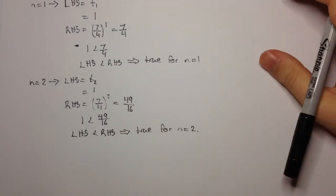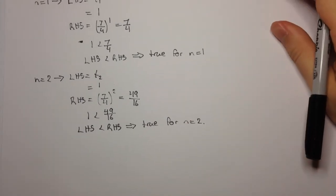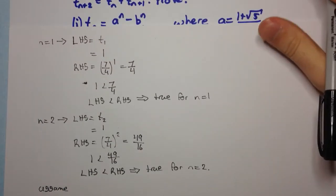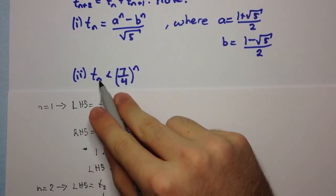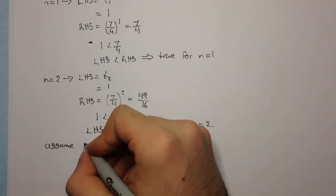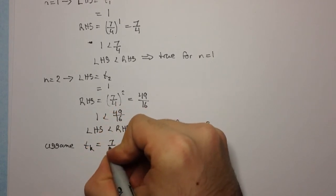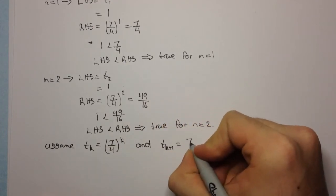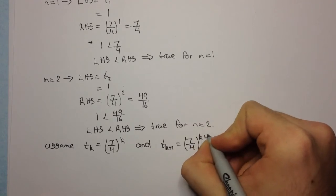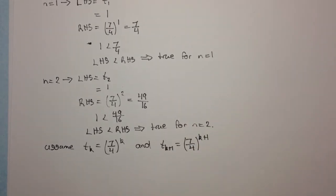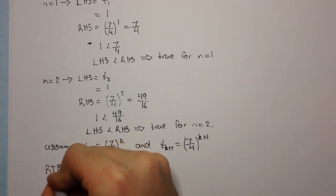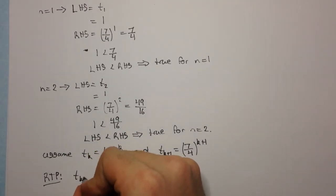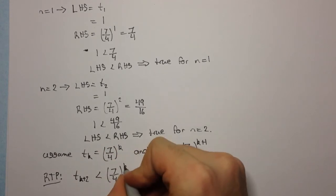Now we need to make two assumptions, as in the previous video. We're going to assume n equals k and n equals k+1 are true. So assume that t_k is less than (7/4)^k and t_{k+1} is less than (7/4)^{k+1}. We are now required to prove the truth of n equals k+2, that is, t_{k+2} is less than (7/4)^{k+2}.